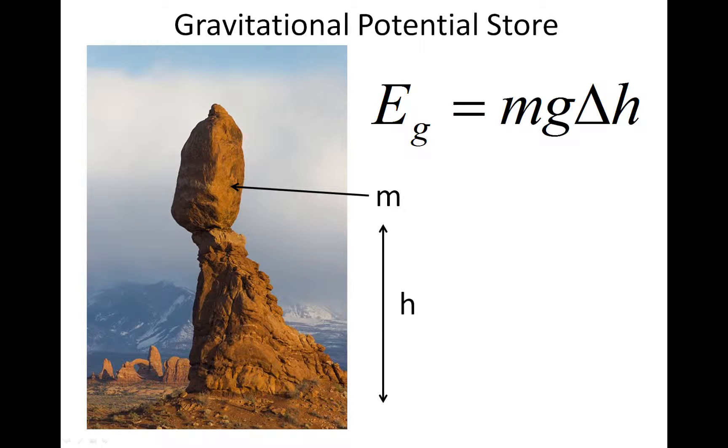Gravitational potential store. This is the energy store associated with an object's mass and its height above the ground. Now we have an equation for this.